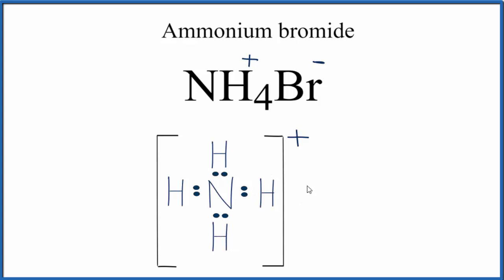Then we have our bromine. Bromine normally has 7 valence electrons, but because it's negative, it actually got an electron from NH4, which made this positive. When it got that electron, it has an extra one, making it negative, so it now has 8 valence electrons.